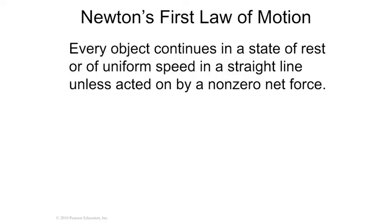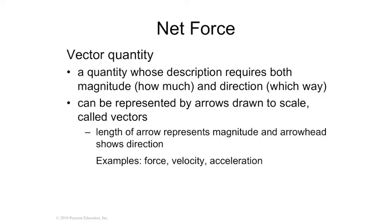So we get to Newton's first law of motion. Now, Newton was an English fella in the 1600s, so about 100, 120 years later after Galileo, and he embedded Galileo's idea of inertia into his first law. Every object continues in a state of rest or at uniform speed in a straight line unless acted upon by a non-zero net force. You may have learned this already. An object in motion stays in motion. An object at rest stays at rest unless acted upon by an external force.